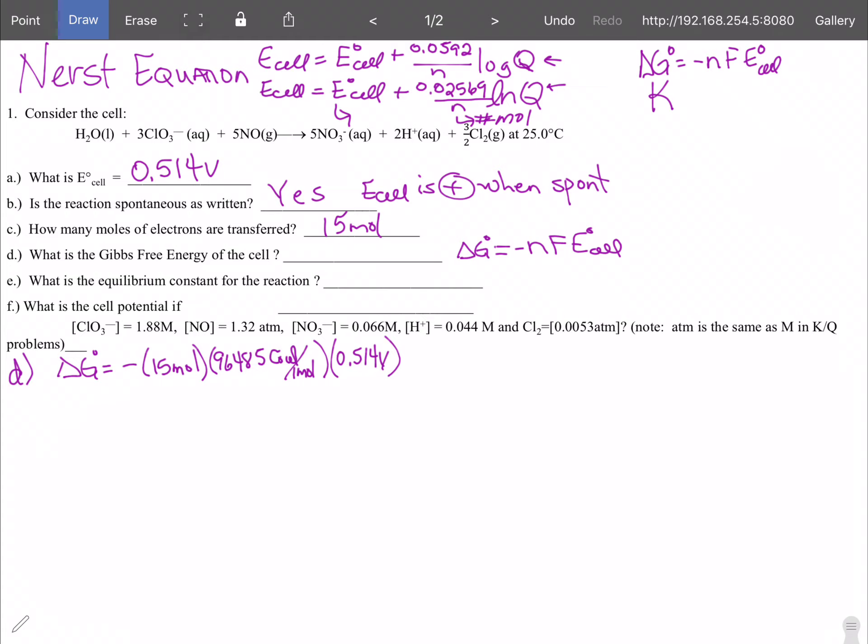We end up with negative 743899.35 joules. For those people who like smaller numbers you can record it as negative 743.89935 kilojoules doesn't matter which way you put it. And again the cell was spontaneous because it was positive which makes the free energy negative spontaneous so we'll go with negative 743899.35 joules.